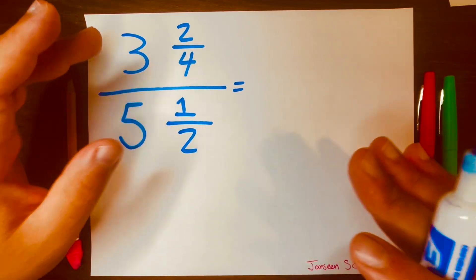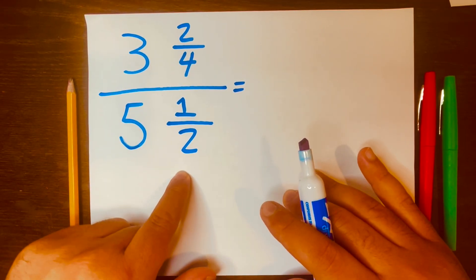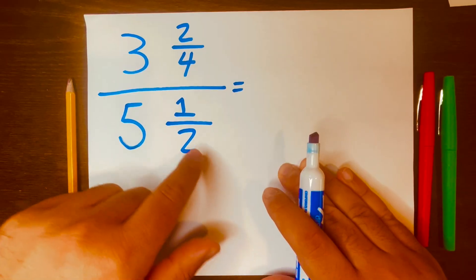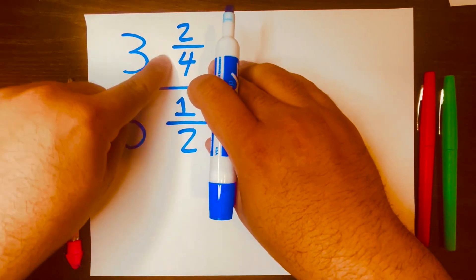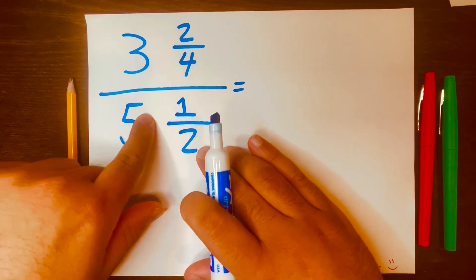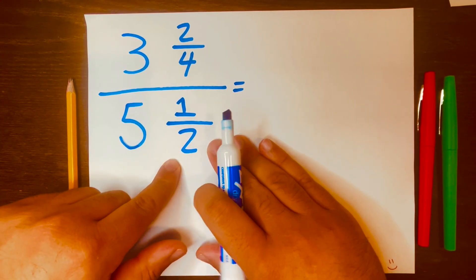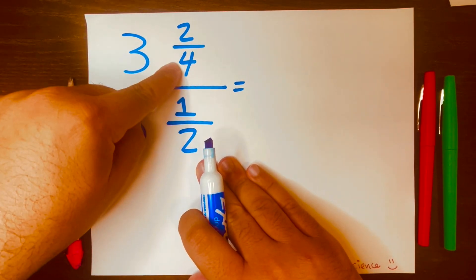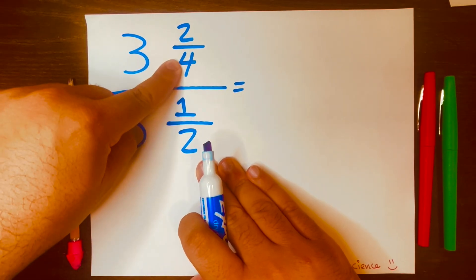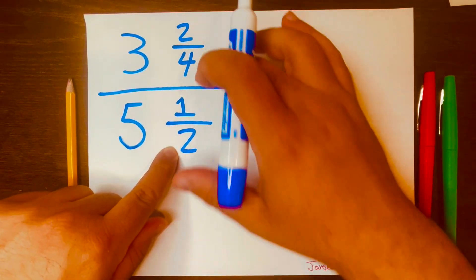Hi everyone, today we're going to solve this viral math problem. The answer to this problem will be a proper fraction. A proper fraction is when the top number is smaller than the bottom number — for example, two over four or one over two are proper fractions.